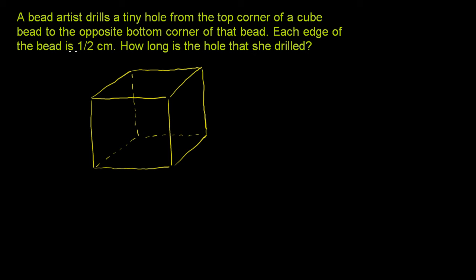Each edge of this cube bead is 1½ centimeters — this is 1½ centimeters, this is 1½ centimeters, and that is 1½ centimeters. They say that they drilled the hole from the top corner to the opposite bottom corner, so from the top corner to the opposite bottom. I think they're talking about the longest diagonal that can fit in the cube, going from the back right top corner to the front left bottom corner. That's the longest diagonal that could fit.